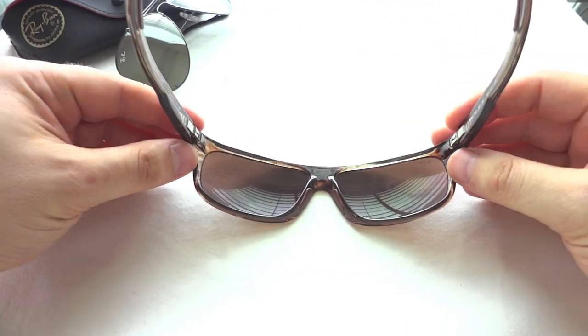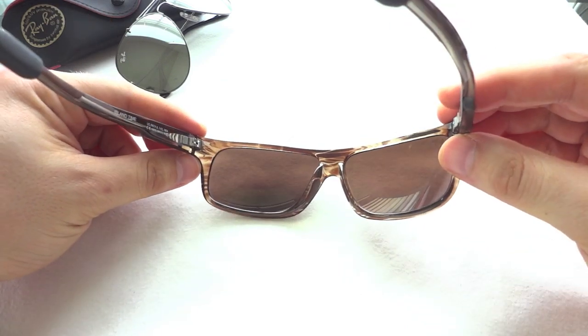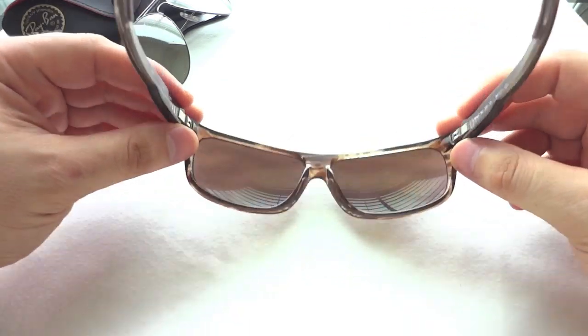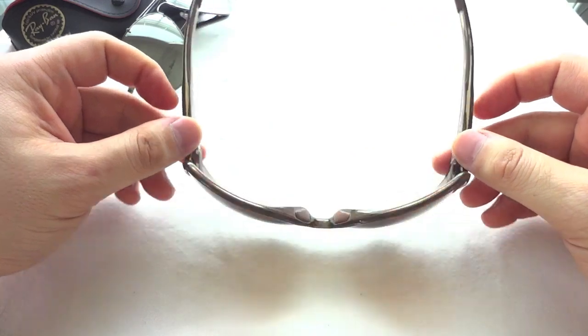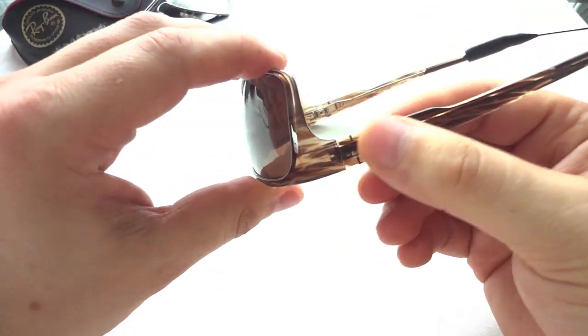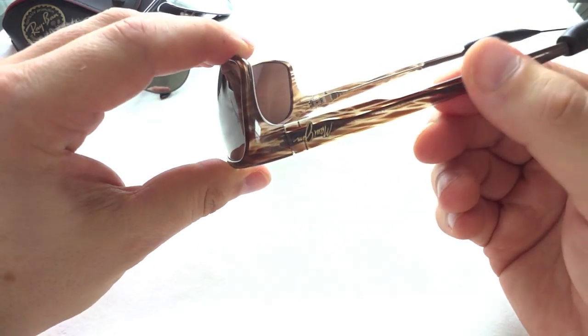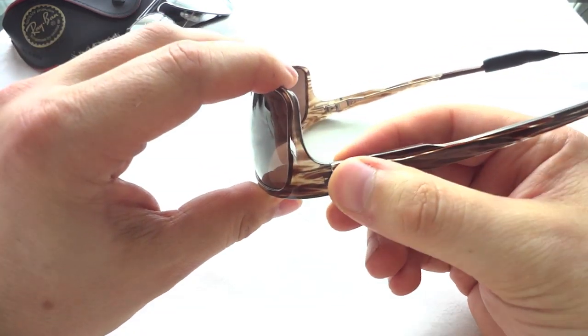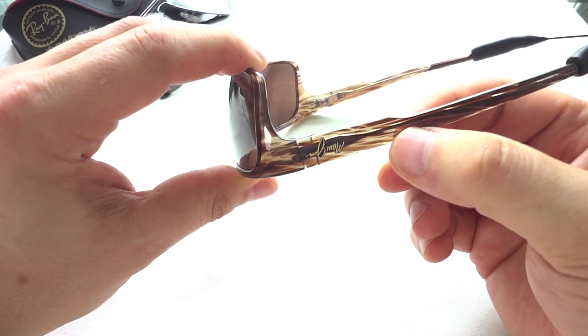As far as Maui Jims go, these come in multiple colors. I like this one, a little out of the ordinary. The black was like matte black, and I thought the frame was prone to scratches.